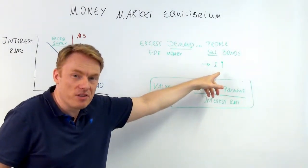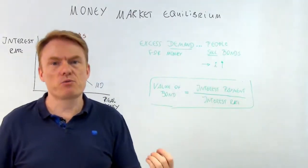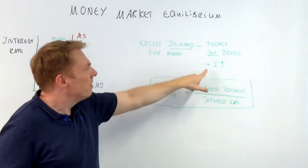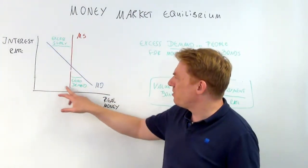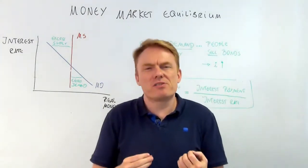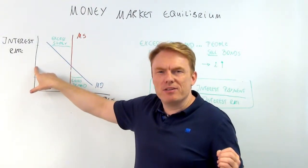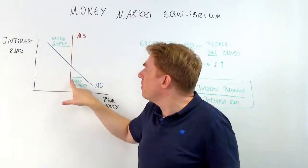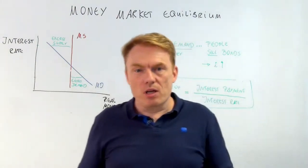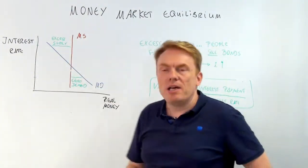And if the value of the bond goes down, that means the interest rate goes up — because of the negative correlation between the interest rate and the value of the bond. So all in all, an excess demand for money causes people to sell bonds, which causes the interest rate to rise. The interest rate will keep rising as long as there is an excess demand, until the point of equilibrium where there is no longer any excess demand. The opposite holds true as well: excess supply of money causes the interest rate to go down.